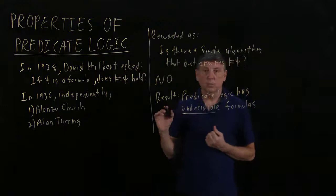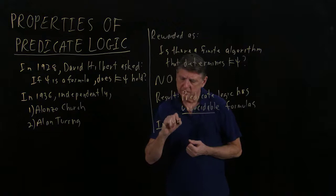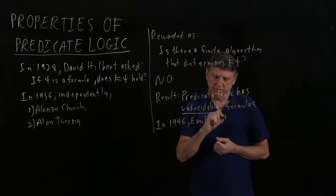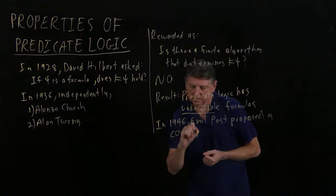And one way that was illustrated much later, not much later, but later, this was in 1946. Emil Post proposed a specific example, proposed, and he called it a correspondence problem.